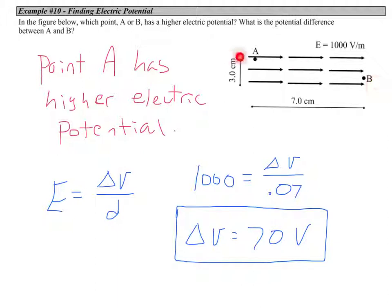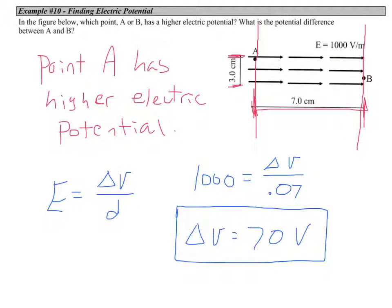Keep in mind that these arrows are pointing in the direction of the electric field, and points A and B are on equipotential lines here. Our potential difference uses this distance of 7 centimeters — the 3 centimeters here doesn't impact the potential difference between points A and B.